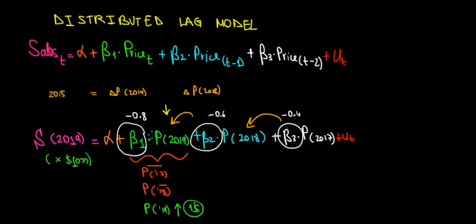Now how would we interpret minus 0.6? Let's give the same analogy, the same logic. Well over here we're keeping the other two constant. There's no change in 2017, so price of 2017 of our jeans stays constant. In 2019 there's no change either. Price in 2019 doesn't change, but price in 2018 over here—price in 2018 would go up by $1. Well that effect is gonna decrease our sales by minus 0.6 times a thousand dollars, so a decrease in sale of $600.